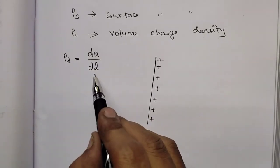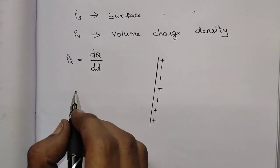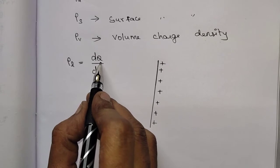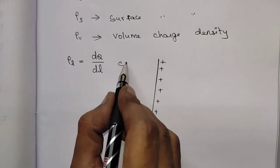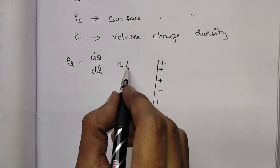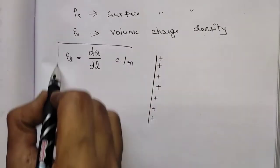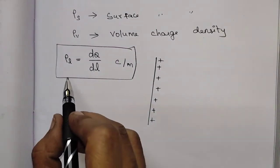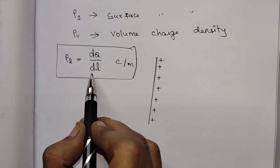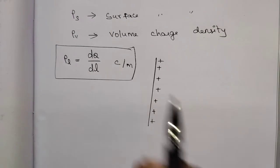So charge per unit length is known as line charge density. What is the unit of line charge density? The unit of charge Q is coulomb, and the unit of length is meters. So the unit of line charge density is coulomb per meter.